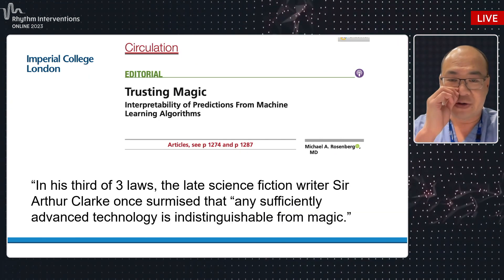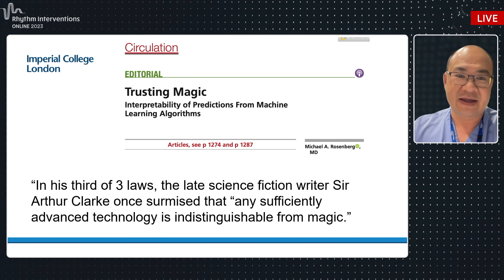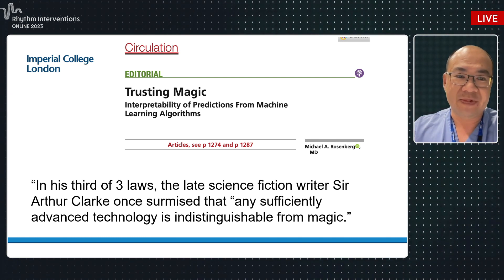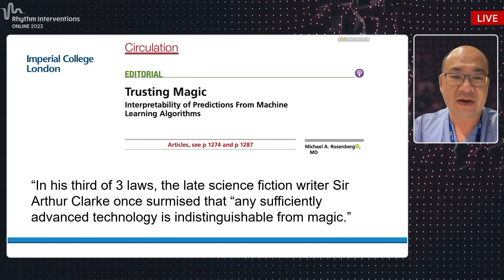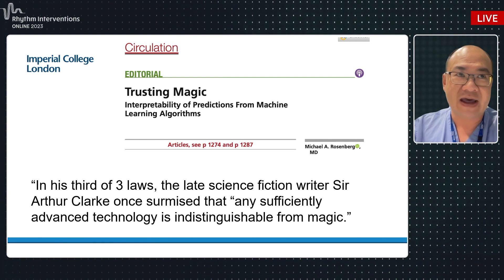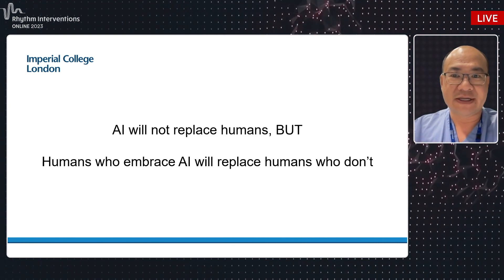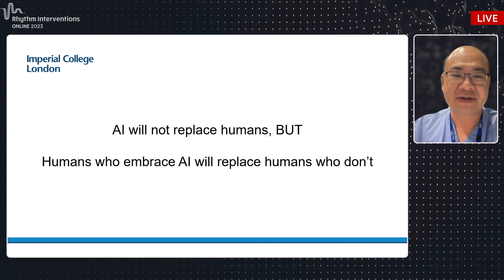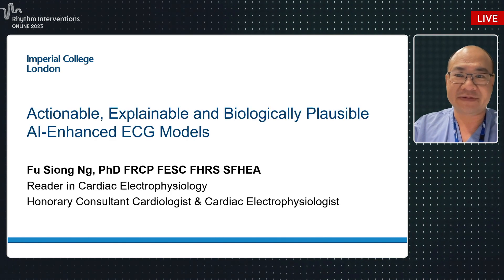I want to finish with an editorial I really like about AI ECG — it's about trusting magic. Some of what I've shown may feel like magic and beyond human capability. The editorial quotes Sir Arthur Clarke, who surmised that any sufficiently advanced technology is indistinguishable from magic — and certainly AI ECG appears to be that. My final quote: AI will not replace humans, but humans who embrace AI will replace humans who don't.